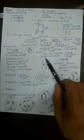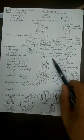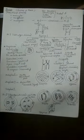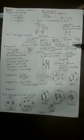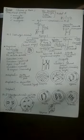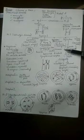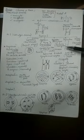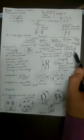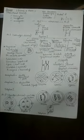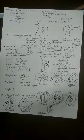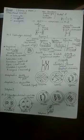As synaptinemal complex starts breaking, the homologous chromosomes are moving far from each other. Now they are only attached at which place? The place of crossing over. And the places of crossing over are called chiasmata. Please remember this word - in NCERT it is clearly mentioned: crossing over takes place at chiasmata.